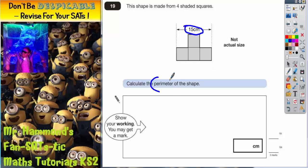Remember, this keyword here, perimeter, is a posh word for the distance around the outside of the shape. So we're interested in the distance around the outside. It says show your working, you may get a mark.